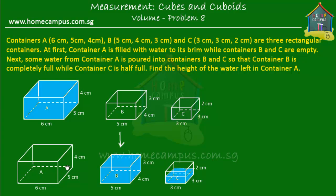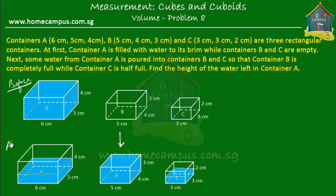Now how about the height of water left in container A? Obviously when some water was poured into B and C, container A was no longer full — the water level reduced to some height. Let's mark that on the figure. So the water level reduced, and now container A has this much amount of water. This was all before and this is all after water from A was poured into B and C.